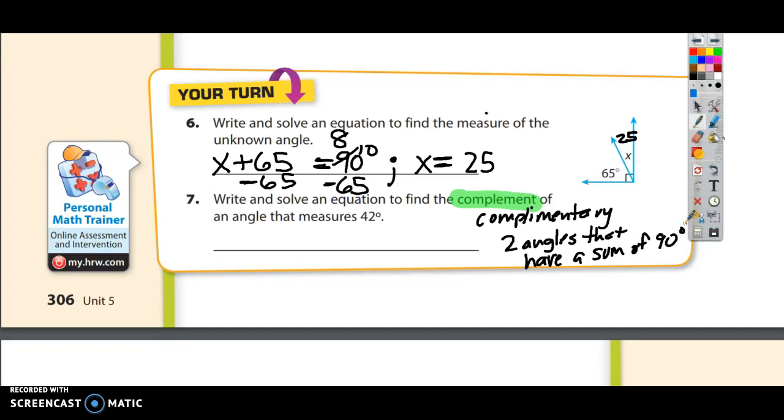So what we're doing here for number 7 is we're going to add up our unknown plus 42. We're finding the complement of 42. So we're adding up x plus 42 is equal to 90. Now where am I getting 90? From this word complement right here.